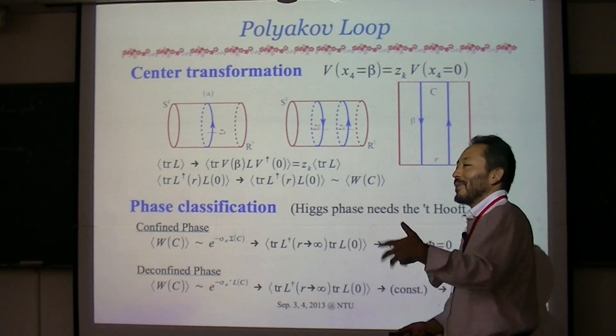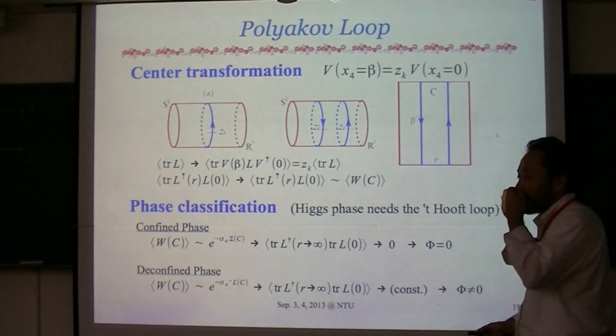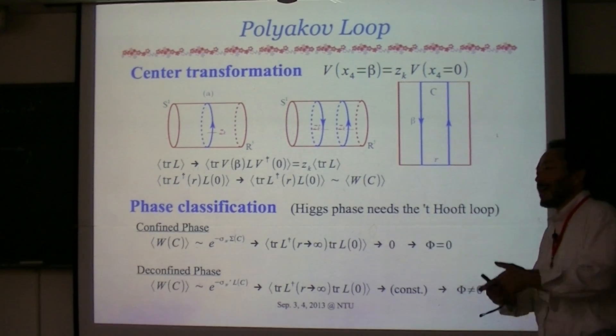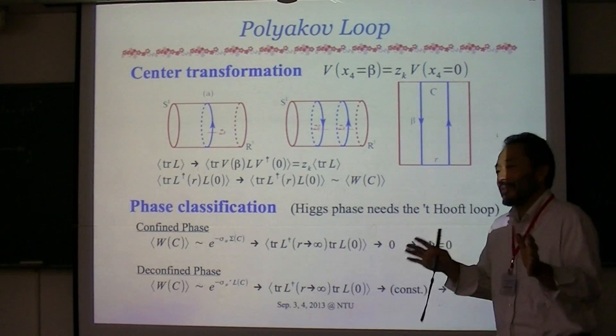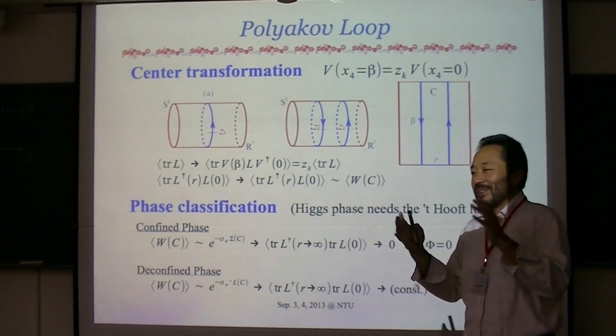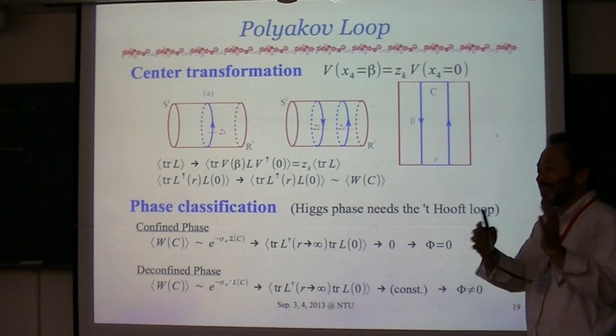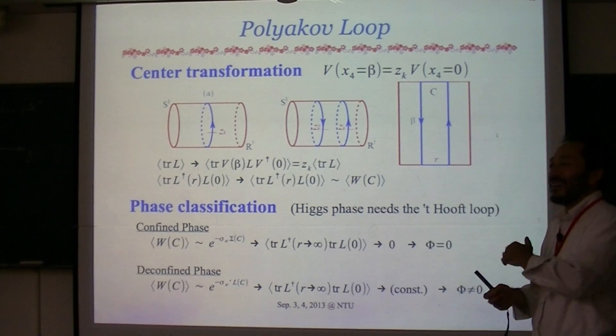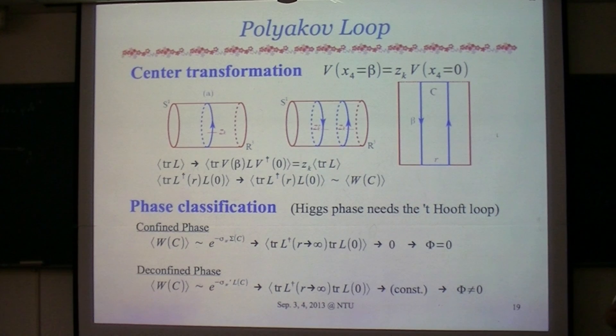Then you find many divergences. And usually for Wilson line or Wilson loop, that divergence is something manageable. But for Polyakov loop, actually the character of the divergence is more nasty, and so it is very difficult to remove the UV divergence uniquely.